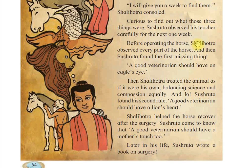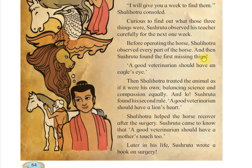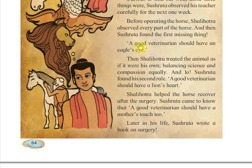Before operating the horse, Shalihotara observed every part of the horse, and Sushruta found the first missing thing. A good veterinary doctor should have an eagle's eye — meaning they should watch closely and notice all details.